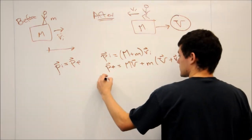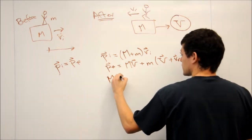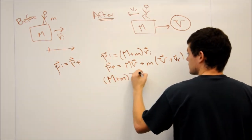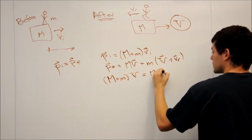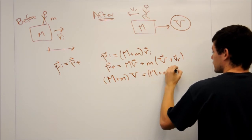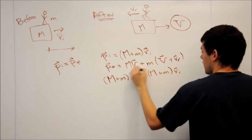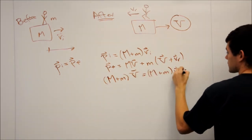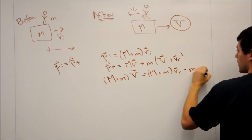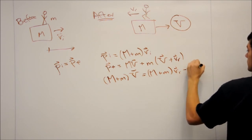So what that's going to give us is big M plus little m times big V equals big M plus little m times VI. And then we subtract this out. So this is going to be negative little m times VR.